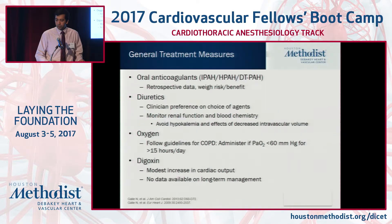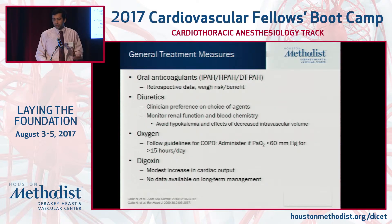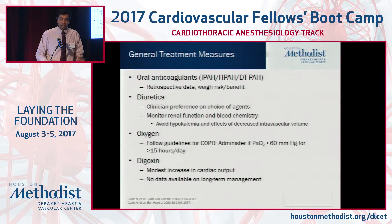We'll quickly go over some of the PH therapies. General treatment measures address the right heart — diuretics to decrease preload, digoxin to help with contractility, and oral anticoagulants. The data on anticoagulants is a little controversial and is mostly recommended in patients with idiopathic pulmonary hypertension.